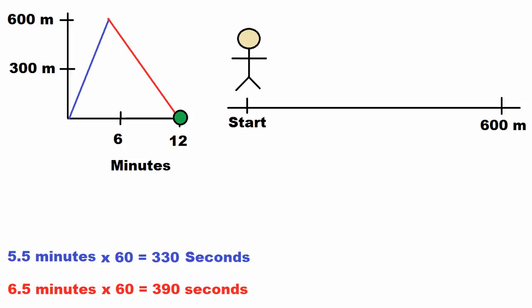First thing that we're going to do is we're going to convert those times from minutes to seconds. We're going to do this by multiplying each of them by 60. So the 5.5 minutes equals 330 seconds, and the 6.5 minutes equals 390 seconds.